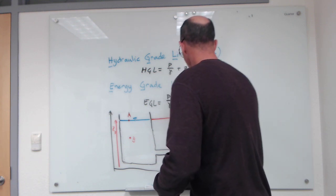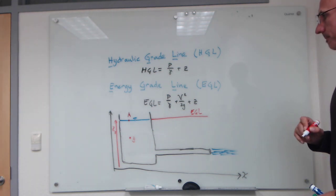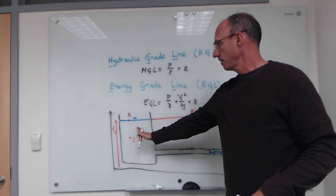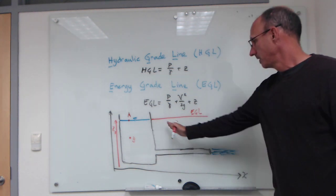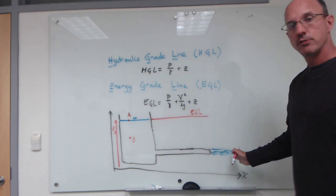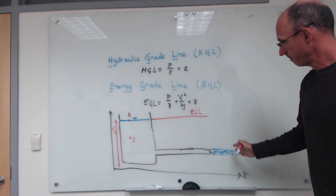I would label that the energy grade line. It shows that you begin with an energy equal to the water surface height, flow moves into the pipeline, maintains that energy, and then it flows out with that energy.